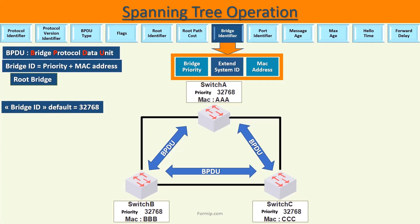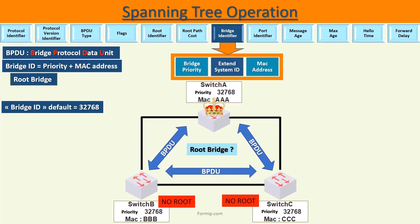By default, the priority is set to a value of 32768, and it is possible to modify it if desired. So on this topology, what will be the root bridge? Since the priority is the same on all the switches, the selection will be made based on the smallest MAC address, and here it is switch A — it will be the root bridge.